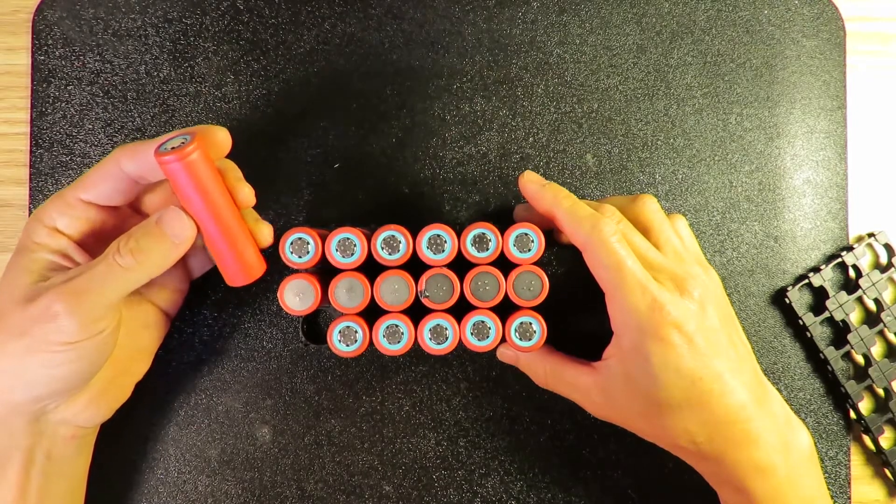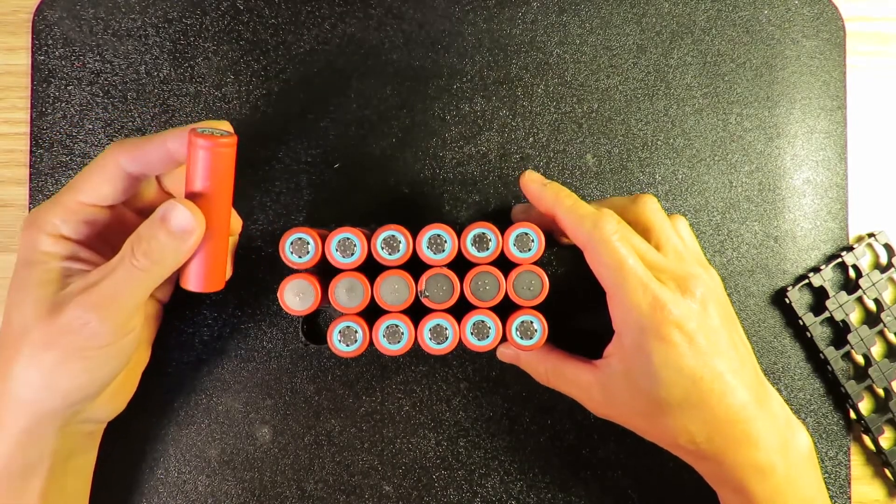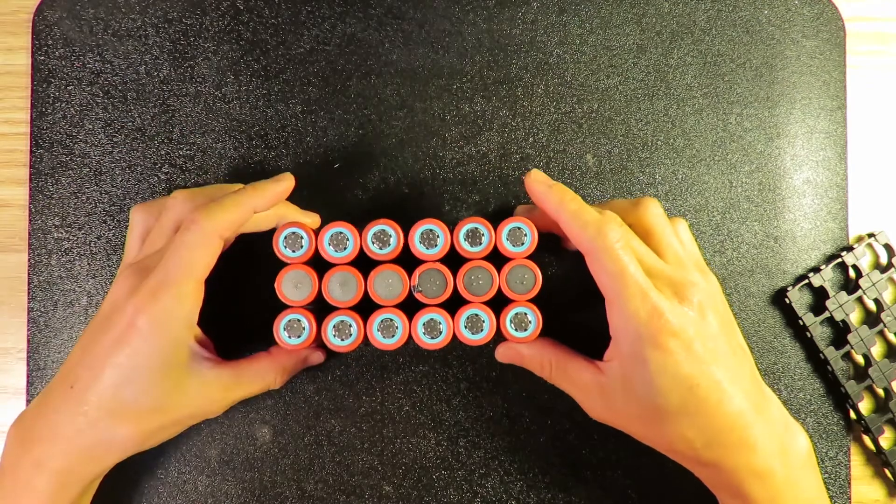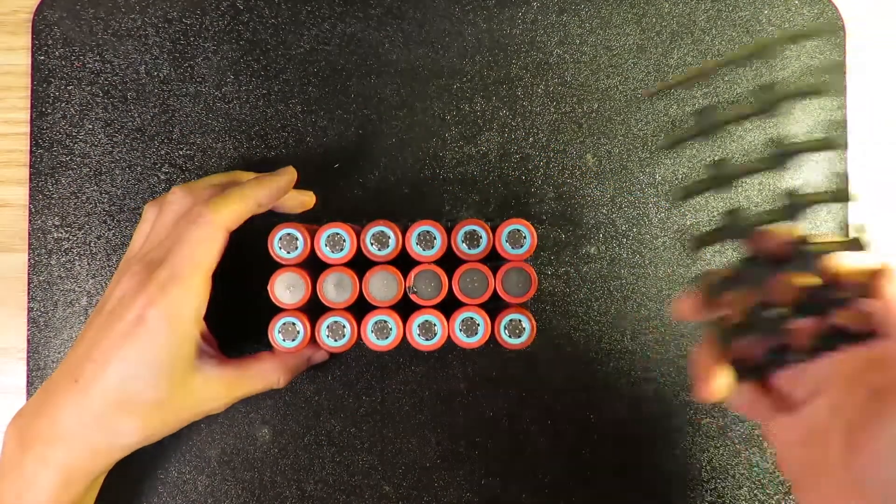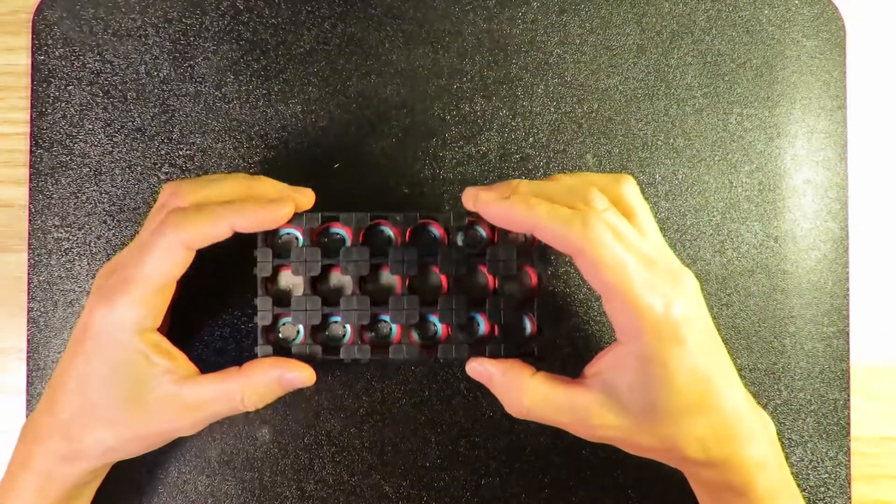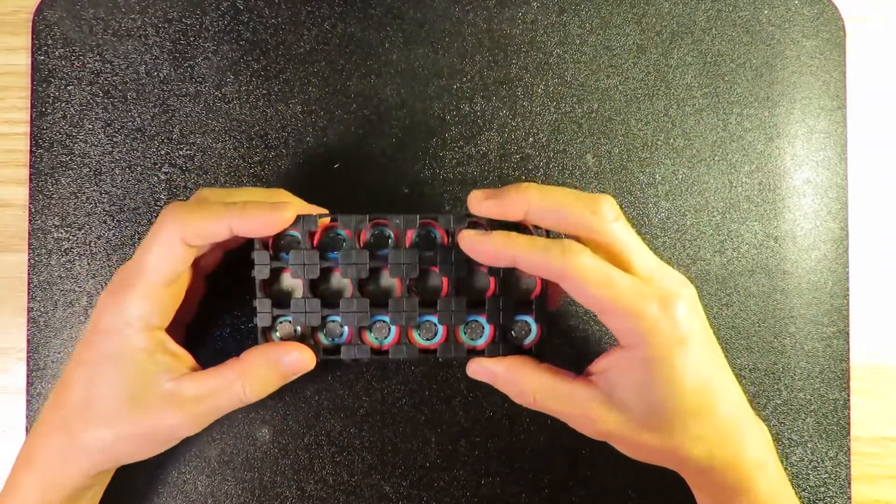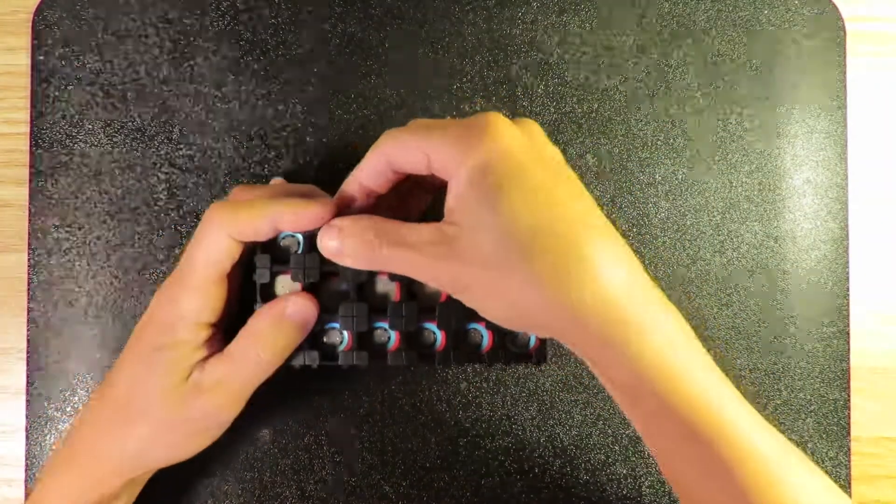First, you need to purchase this 18650 lithium battery cell. In my case, I have 18 of them, and I have put them into the spacer. As you can see here, this is the spacer, so I just mount them.